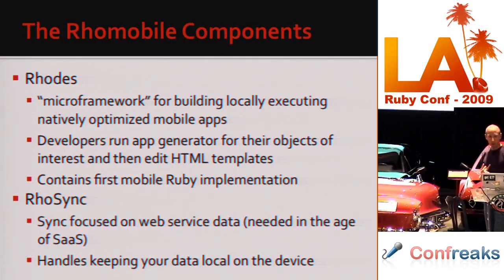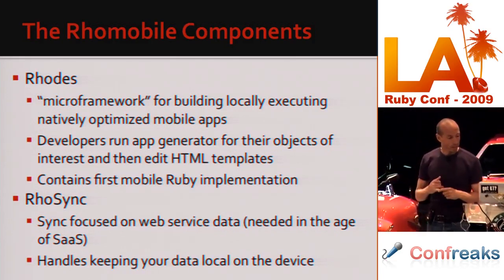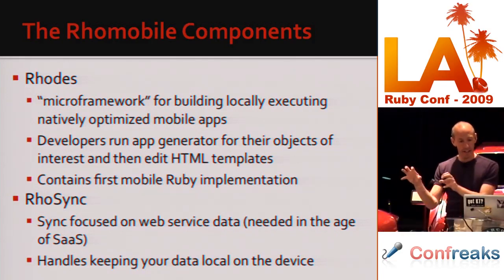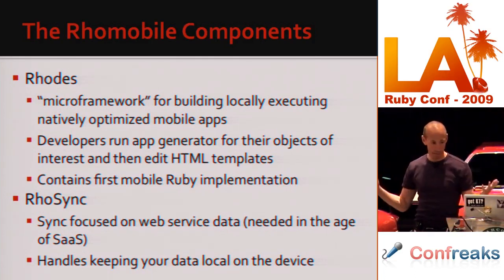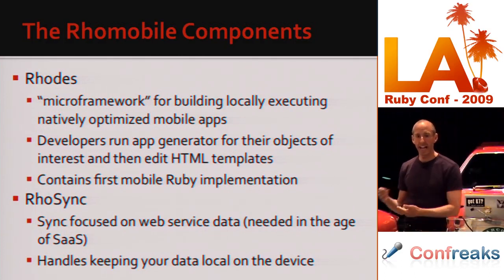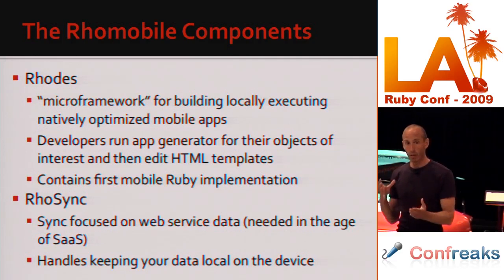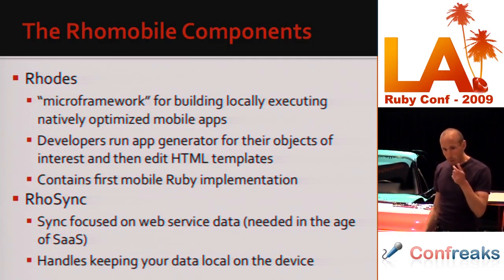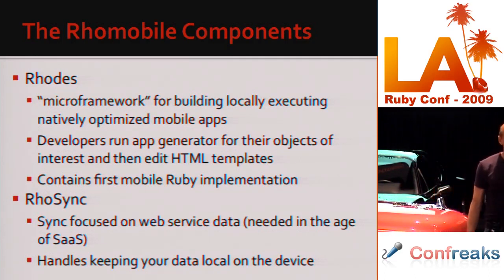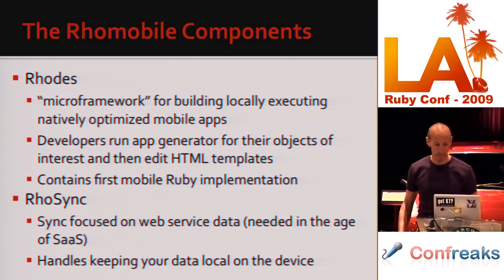One of the Rhomobile components is Rhodes — a micro-framework for building locally-executing, natively-optimized mobile apps. You run an app generator, just like the Rails scaffolding generator, for your objects and attributes. Then you mostly edit HTML templates. Developers who have used our stuff find they can change the controller and write it in Ruby if needed, but generally developers spend most of their time just editing the HTML templates.